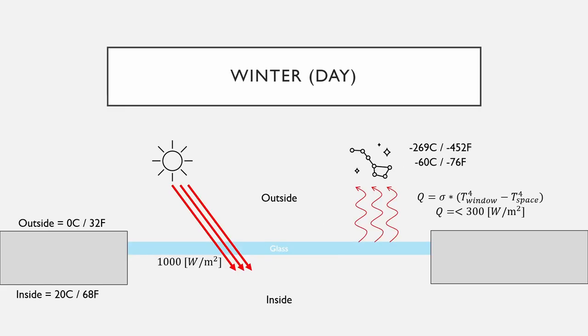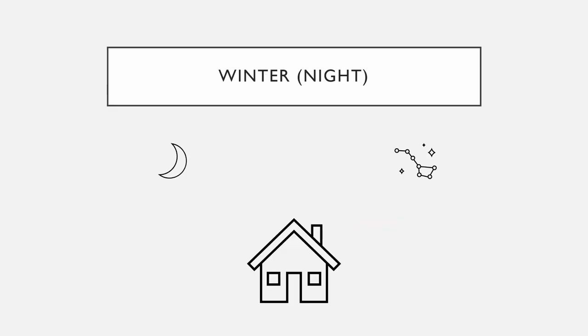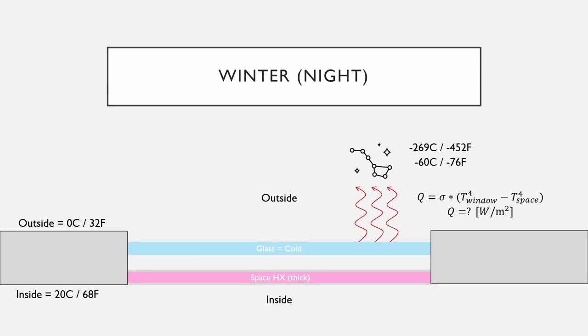In the winter during the day, you would just keep things as normal because you want the sunlight to heat up your home for free. But at night time in the winter, you'd want to put on a thicker version of the Space HX on your window, preferably one made of foam and with mylar on both sides. That way all the radiation in your home would get reflected back in, and the Space HX would emit very little radiation to the glass as well.